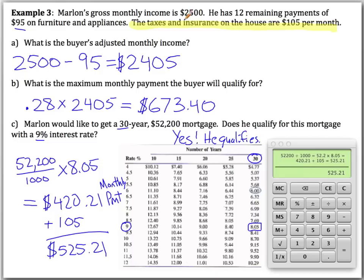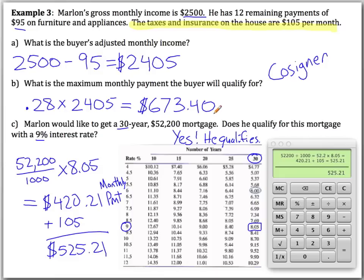If someone doesn't make enough money to qualify on their own, they can use a cosigner — someone who is willing to also sign for the mortgage. The cosigner's gross income gets added to yours, so 28% of this combined total means you're able to qualify for a much larger mortgage.